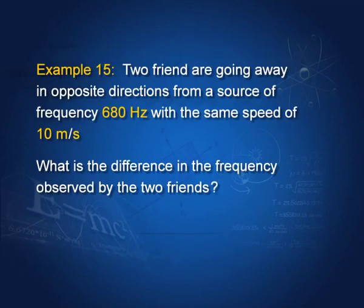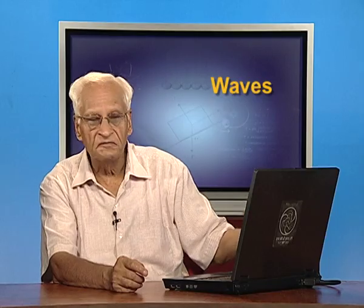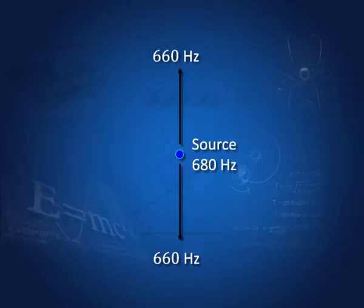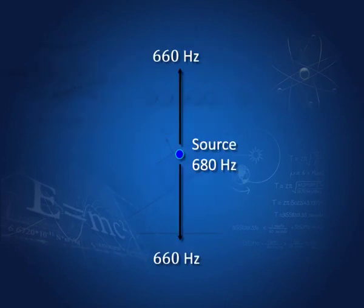Two friends move away in opposite directions from a 680 Hz source, each at 10 m/s. In the Doppler formula, only the magnitude of the observer's velocity matters, not direction. Both friends move away from the source, so both hear 680 × (340 − 10)/340 = 660 Hz — a frequency lower than the source frequency.